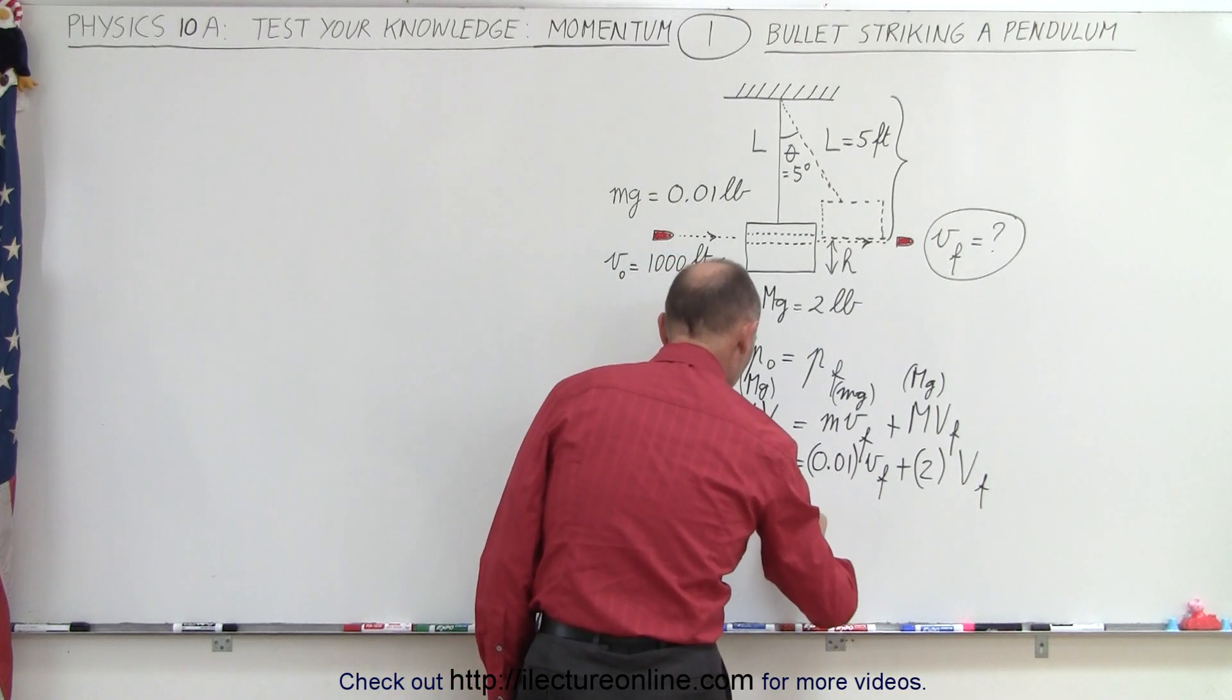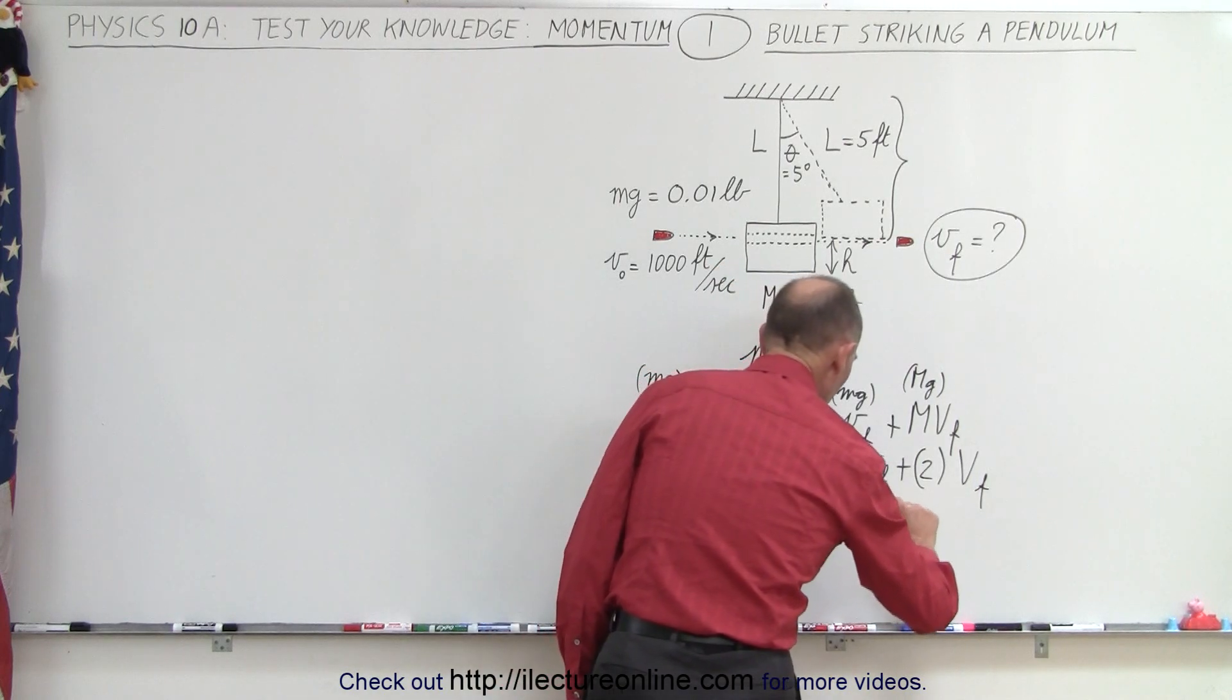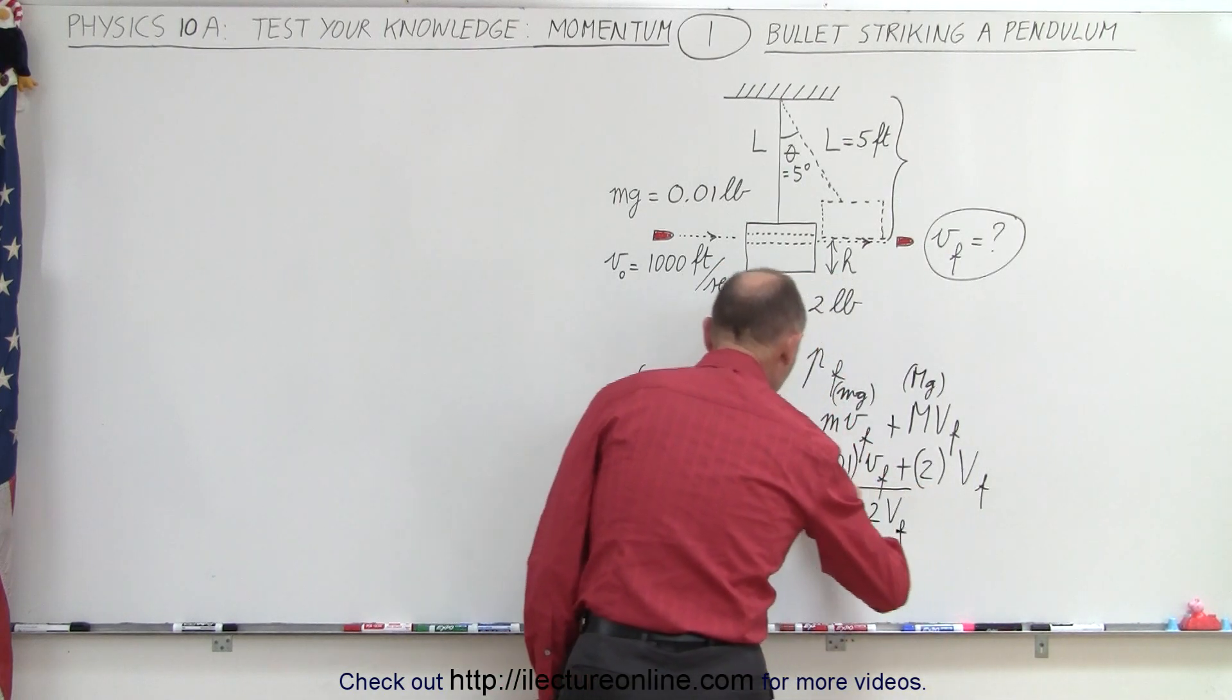We can simplify that: 10 equals 0.01 v final plus 2 big V final, and there's our first equation.